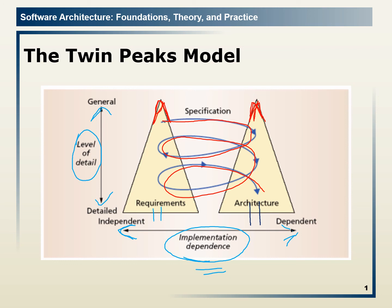Let me tell you again the three points. What is the Twin Peaks model? Number one: the Twin Peaks model tells us the relationship between software requirements and software architecture. Number two: requirements would always be independent, whereas architecture would always be dependent on requirements. Number three: when the abstraction level of requirements specification is high, the corresponding architecture would also be at a high abstraction level. And when the abstraction level of software requirements is low, the corresponding architecture would also be at a low abstraction level.